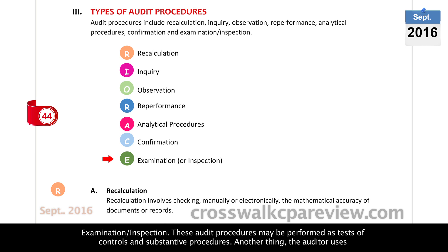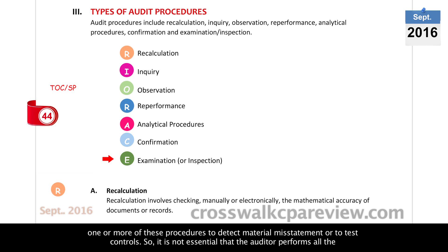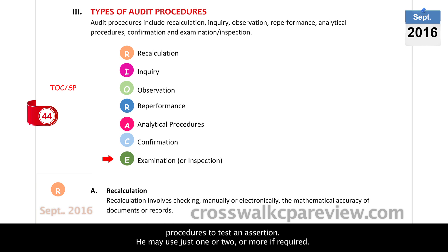These audit procedures may be performed as Test of Controls and Substantive Procedures. The auditor uses one or more of these procedures to detect material misstatement or to test controls. It is not essential that the auditor performs all the procedures to test an assertion — he may use just one or two, or more if required.